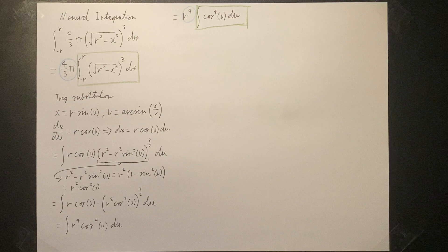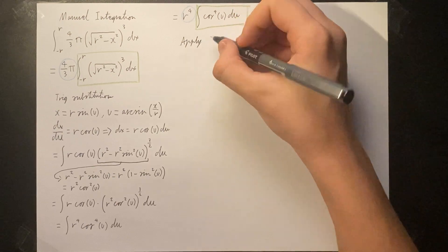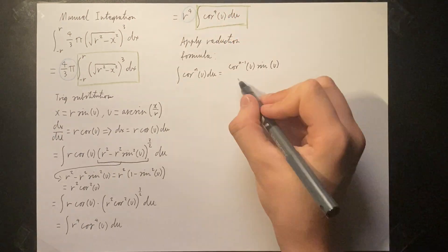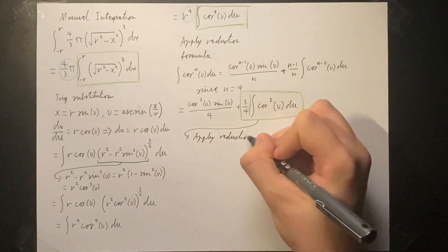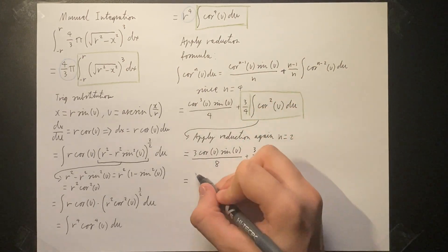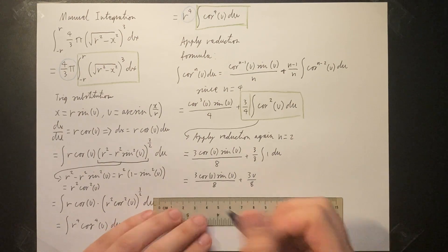Now that everything is in terms of cosine, we can apply the reduction formula to reduce the powers of the integrand. The following formula can be applied. Since n is equal to 4, we can apply the reduction once more for n equals 2. The integral of 1 du is of course u.